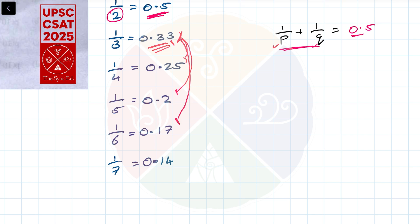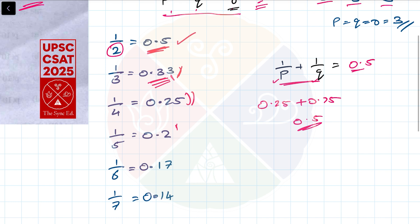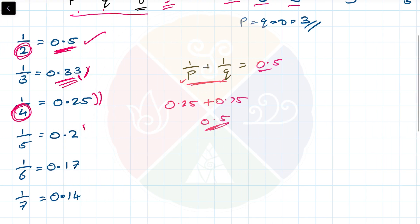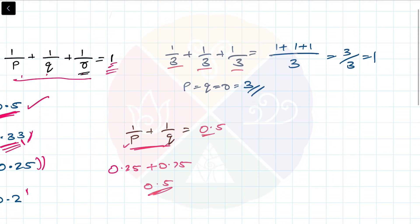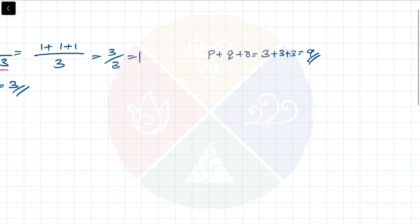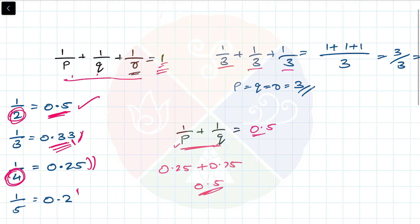Taking 1/4 two times works: 0.25 plus 0.25 = 0.5. So that's another combination. If one value is 2, we take 4 twice. Therefore P plus Q plus R = 2 plus 4 plus 4 = 10. That's another possible value of P plus Q plus R, because 1/2 plus 1/4 plus 1/4 = 1.